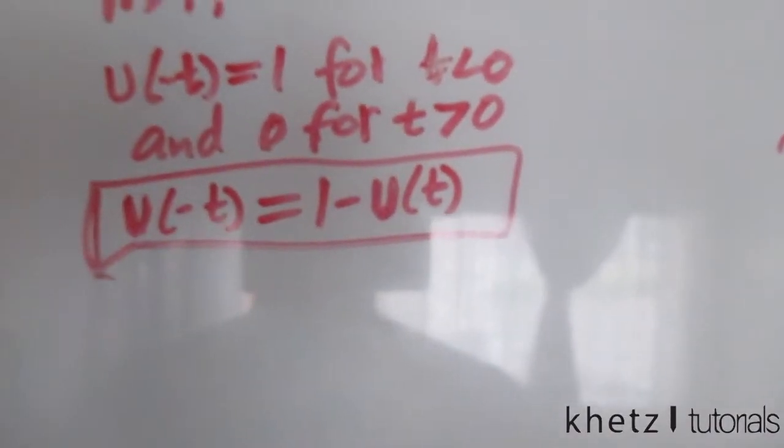Moving on to t greater than zero: the 20·u(-t) source is now inactive and falls away. For t greater than zero, the circuit consists of the 5-ohm resistor, the 0.2-farad capacitor treated as an open circuit, the 10-ohm resistor, and the 3-ampere current source.